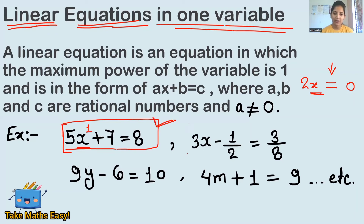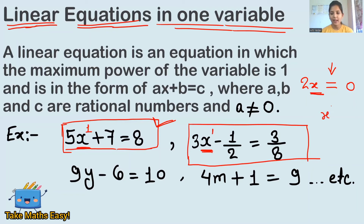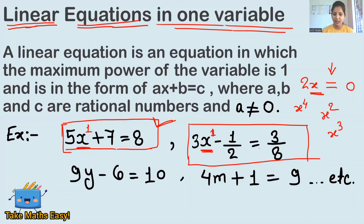The second example: 3x minus one-half equals to three-eighths. Here also, only one variable is present — that is x. The values 3, one-half, and three-eighths are constant values — the numerical values are called constants. The variable is x, and its power is one. There is no x-squared, no x-cubed — only power one. And it's not necessary to write the 1 — if nothing is written in the power, it means the power is one.